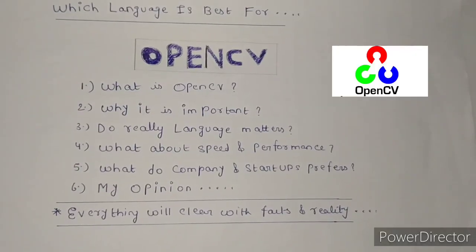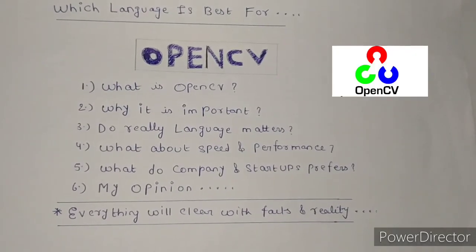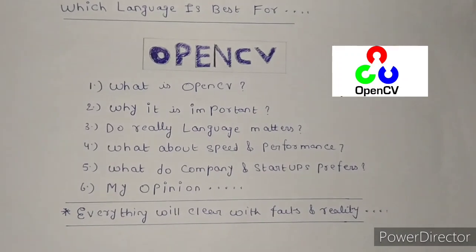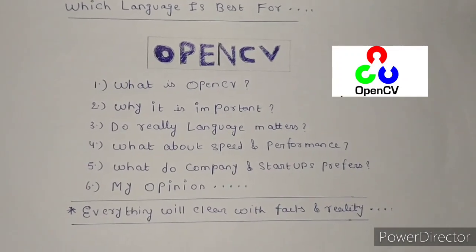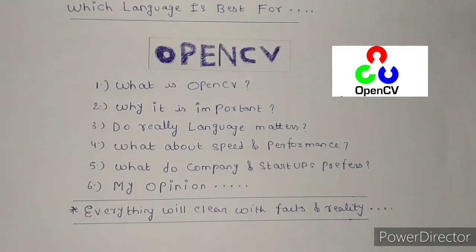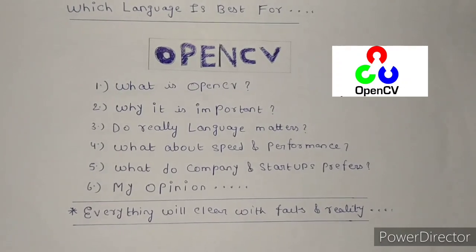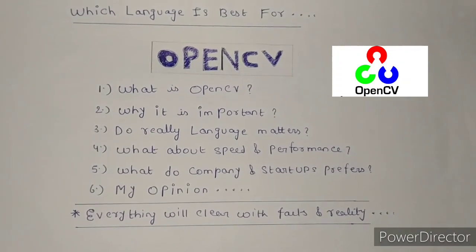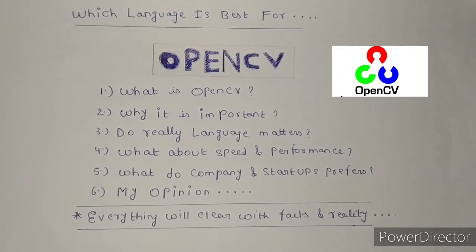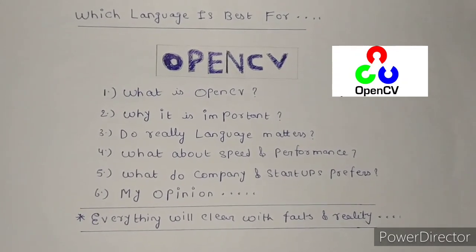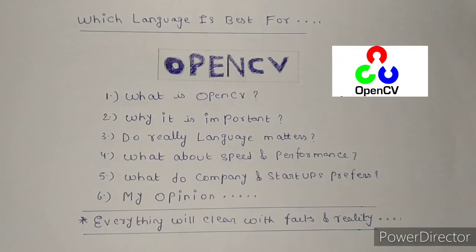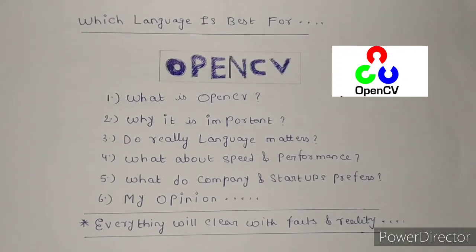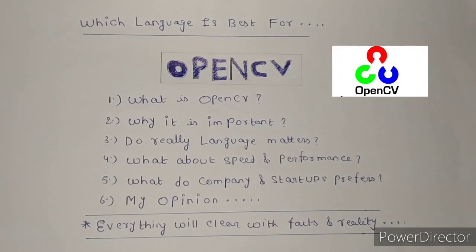Before moving on, for the sake of simplicity, let me give you a quick recap on what is OpenCV. OpenCV, or Open Source Computer Vision Library, is an open source computer vision and machine learning software library. It was built to provide a common infrastructure for computer vision applications and to accelerate the use of machine perception in commercial products. OpenCV makes it easy for businesses to utilize and modify the code.